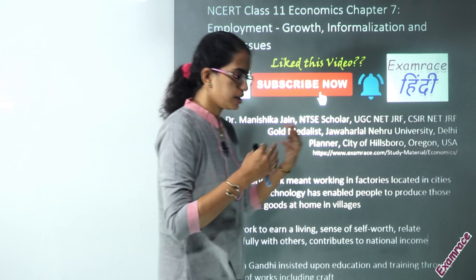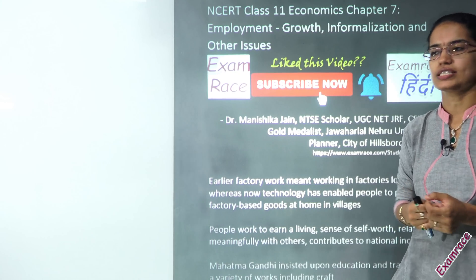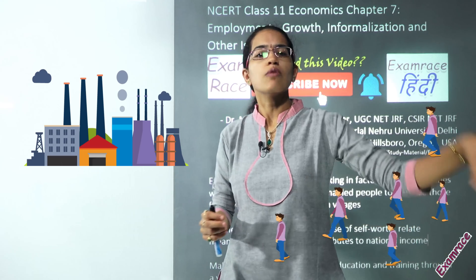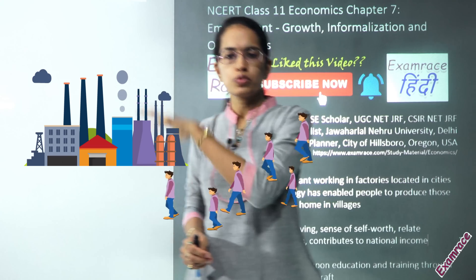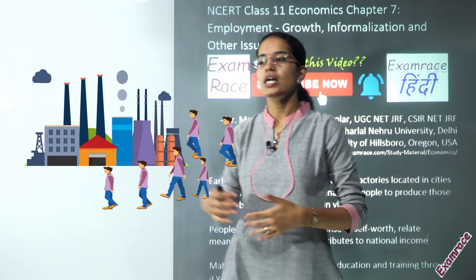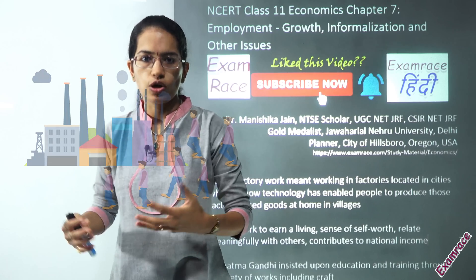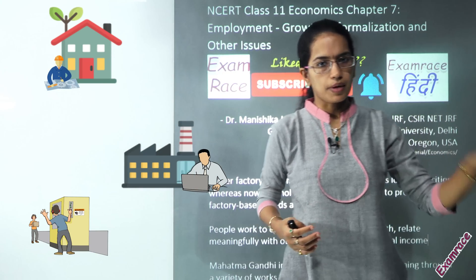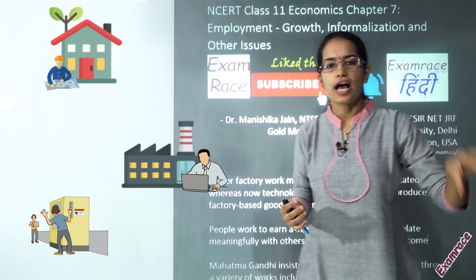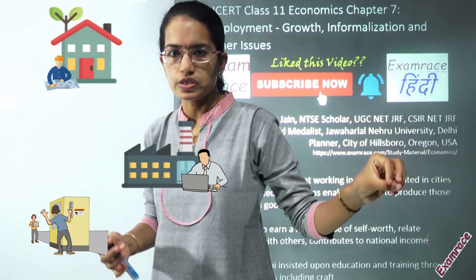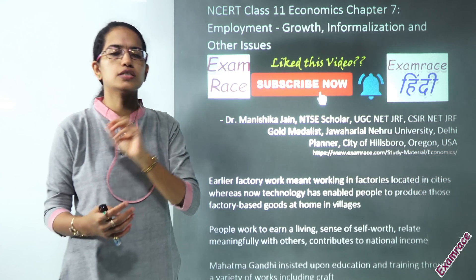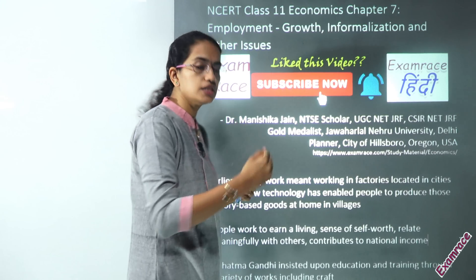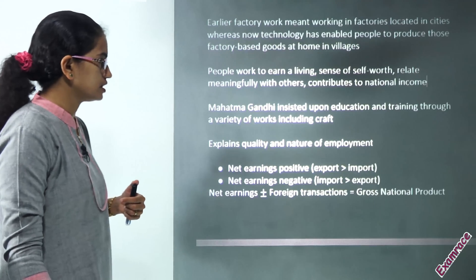When we talk about the initial time of the industrial revolution, factories were located in the cities, so people from the rural countryside had to move to cities to find employment. However, with the advent of technology, even in smaller rural areas this technology started to percolate. People could have their own small units in their own houses — household units and small scale units started to come into existence. That was how there was a change in the employment pattern registered in the initial times.